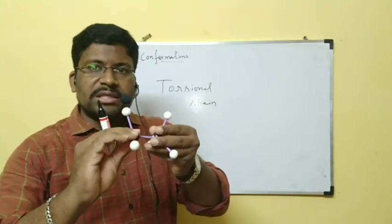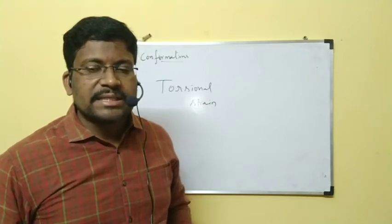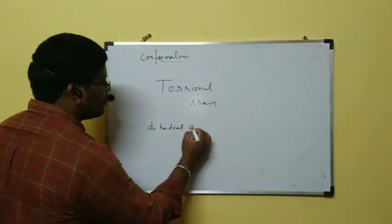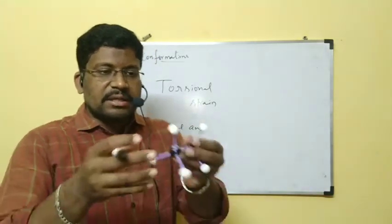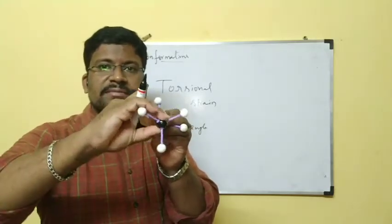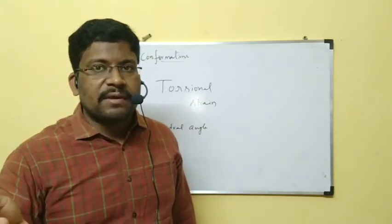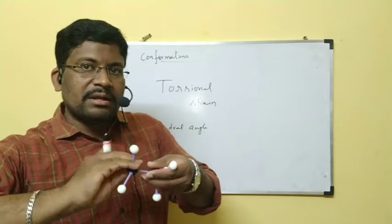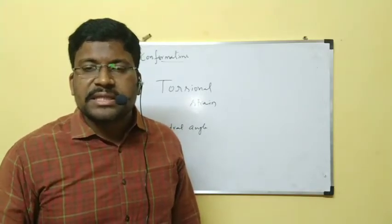When we are rotating from one form to another form, we get some difference in angle. That angle is called dihedral angle. In eclipsed form, both hydrogens are exactly coinciding — zero degrees. In staggered form, there is a 60-degree difference. The difference in angle from one form to another is called dihedral angle. When the bond rotates, some strain develops — that is called torsional strain.